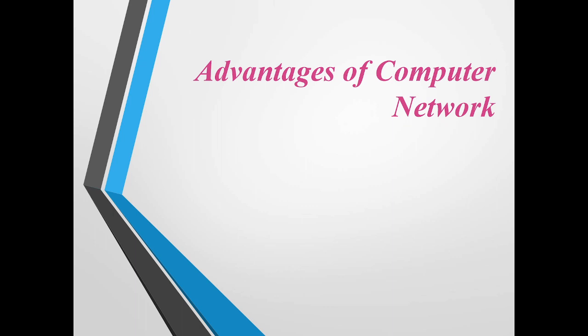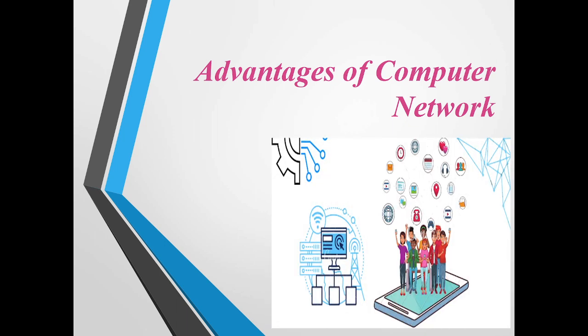As soon as you know how many types of network we have, you must know why we are learning this DCN subject - why we are forming this computer network, what are the advantages, and what could be the objective of computer network. Basically, with the help of computer network we could connect multiple computers so that we could share data, share hardware devices, and do communication.